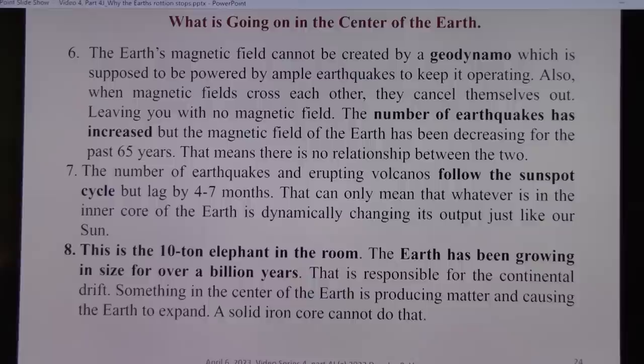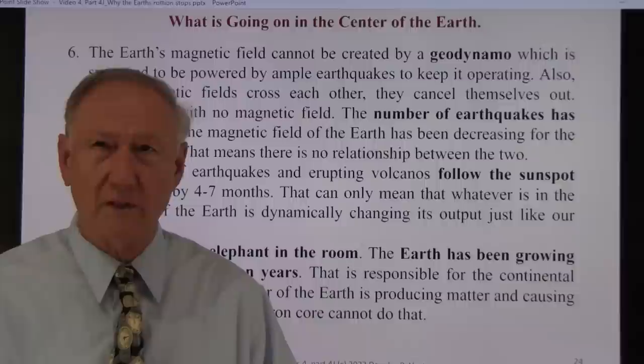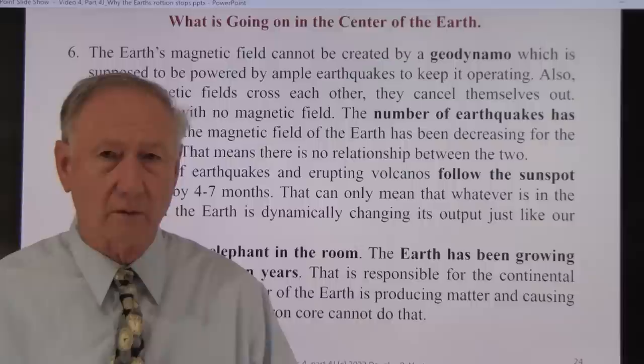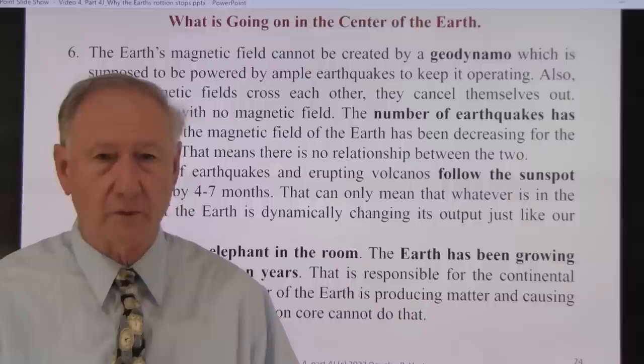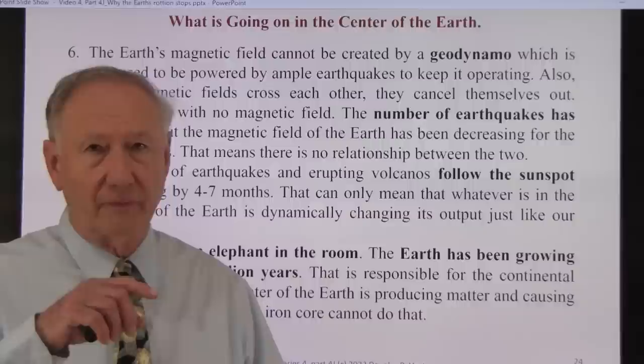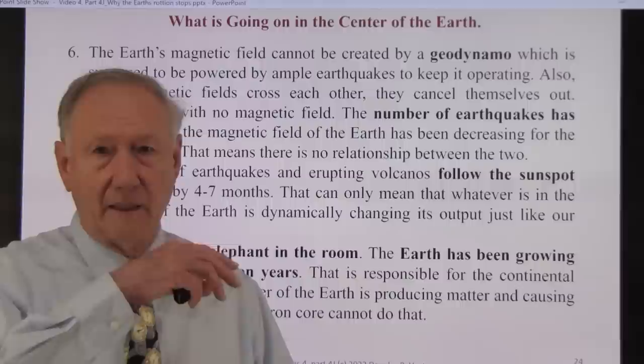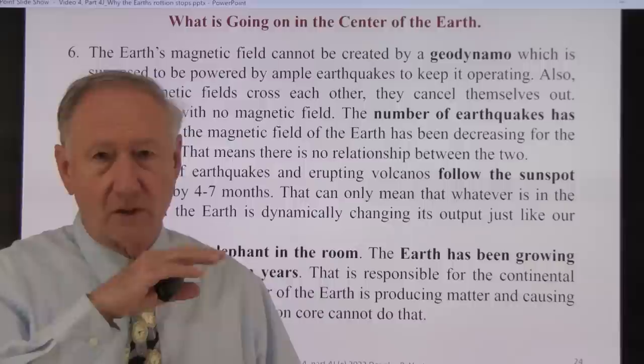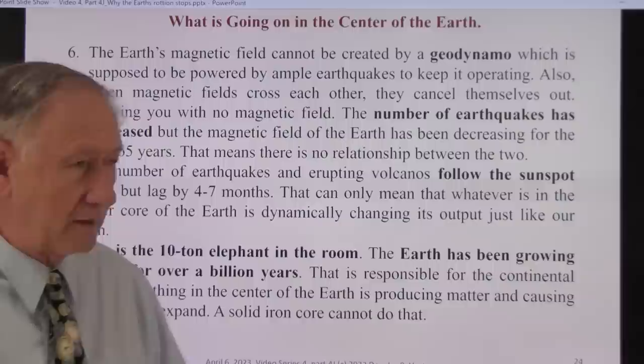Seven. The number of earthquakes and erupting volcanoes follow the sunspot cycle, but lag by four to seven months. That can only mean that whatever is in the inner core of the Earth is dynamically changing its output just like our sun. But I discovered that in the 1980s. And I explained in one of my earlier videos in Series 4 how I discovered it, and there was a direct correlation. It was three or four months if it was at sunspot maximum, and it was like seven or eight months when it was sunspot minimum.